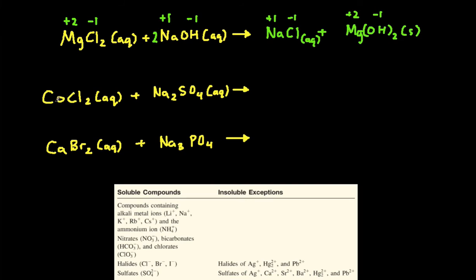All right, next example, we're working with copper chloride reacting with sodium sulfate. Two ionic compounds, so this is going to be a double replacement. The first step, write the charges.